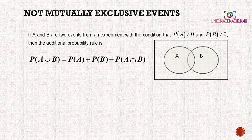For a not mutually exclusive event, there will be an intersection. If A and B are two events from an experiment where P(A) ≠ 0 and P(B) ≠ 0, then the additional probability rule is P(A union B) = P(A) + P(B) - P(A intersect B).